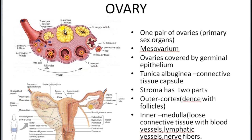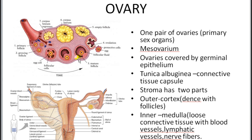Ovaries are covered by a germinal epithelium, which is the outer lining made of simple cuboidal epithelial tissue. Beneath this germinal epithelium, a connective tissue capsule known as tunica albuginea is present. The connective tissue inside the ovary is known as stroma, which is divided into two parts: the external cortex and the internal medulla. The external cortex contains ovarian follicles at different developing stages.